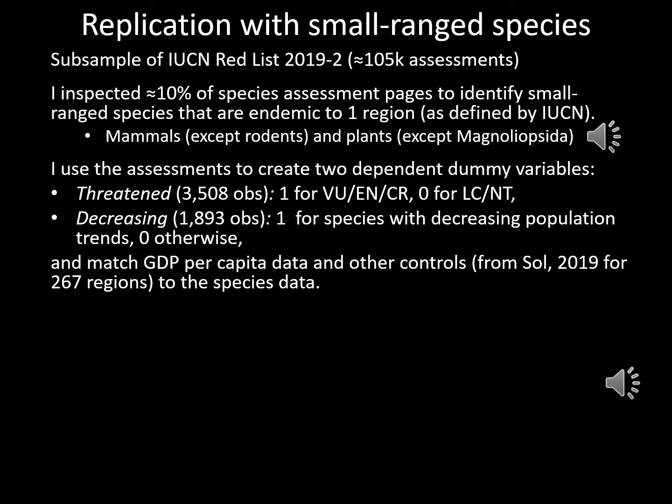For this paper, I decided to organize my data on the species level. I inspected nearly 10% of the 2019 IUCN Red List and chose to include in my sample only small-ranged species that are endemic to one region as indicated by the IUCN. For these endemic species, I created two dummy variables: threatened and decreasing. Threatened was available for 3,500 observations and is one for the categories vulnerable, endangered, and critically endangered, and zero for species that are near threatened or of least concern. Decreasing equals one for species with a decreasing population trend and zero otherwise. Subsequently, I matched the species assessment variables to regional GDP data and other controls as used in the 2019 study.